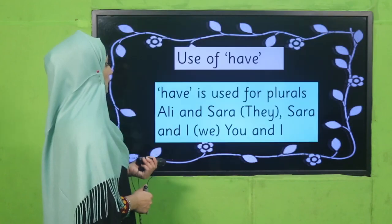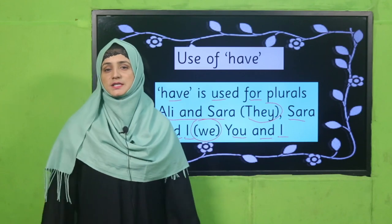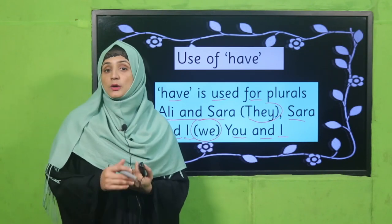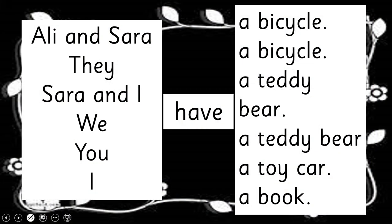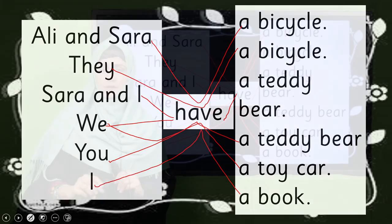Now let's move to the use of 'have.' 'Have' is used for plurals, like 'Ali and Sarah,' 'they,' 'Sarah and I,' 'we,' 'you,' and 'I.' We use 'have' with plural naming words — plural means more than one person, place, or thing. For example: 'Ali and Sarah have a bicycle.' 'They have a bicycle.' 'Sarah and I have a teddy bear.' 'We have a teddy bear.' 'You have a toy car.' 'I have a book.'